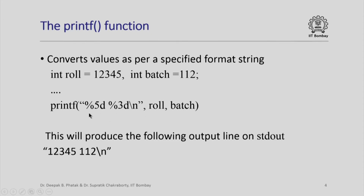Notice that %5d is a format specifier and %3d is another format specifier. There is a blank in between and there is a newline character. This blank and the newline character are produced verbatim on the output. If we use the printf function like this, it will produce the line 12345 blank 112 followed by a newline character. The blank comes from the physical blank in the format string and \n also comes from the \n in the format string.